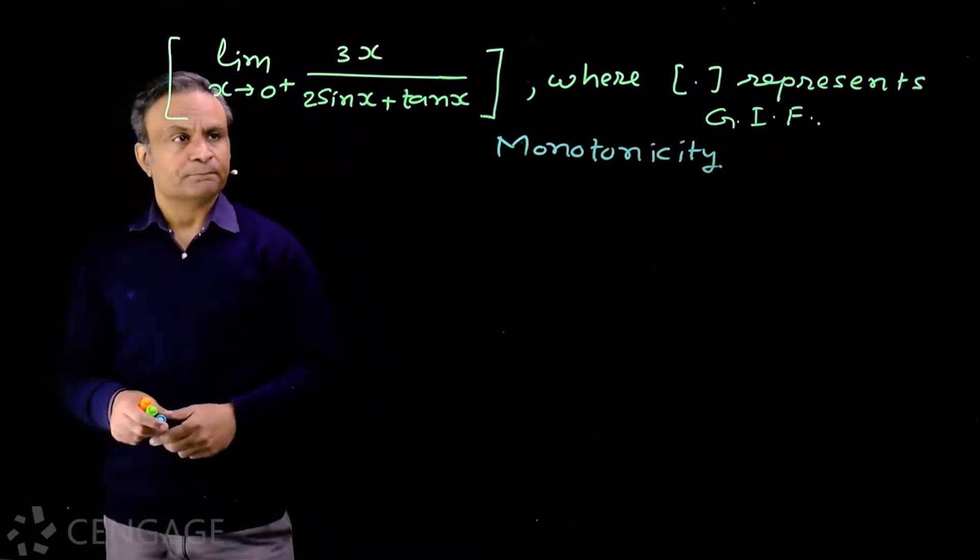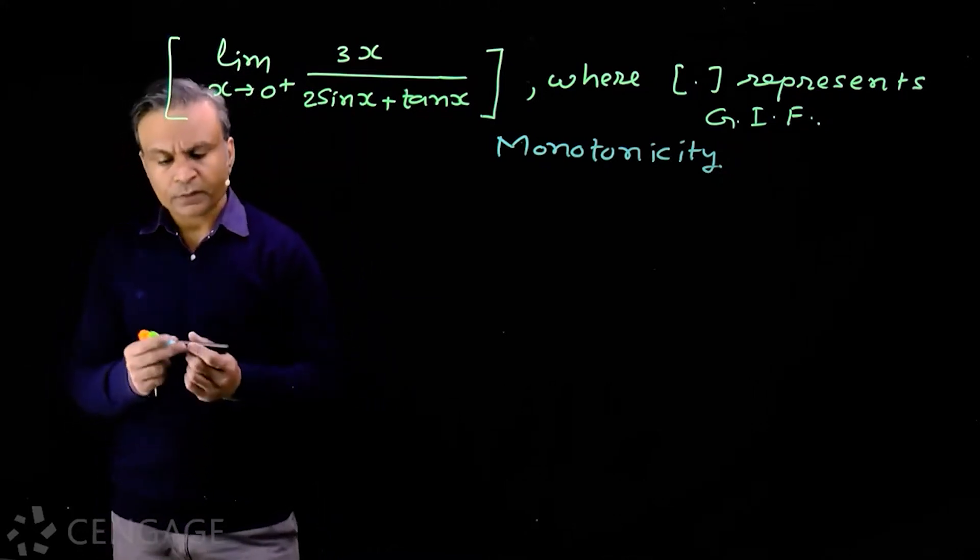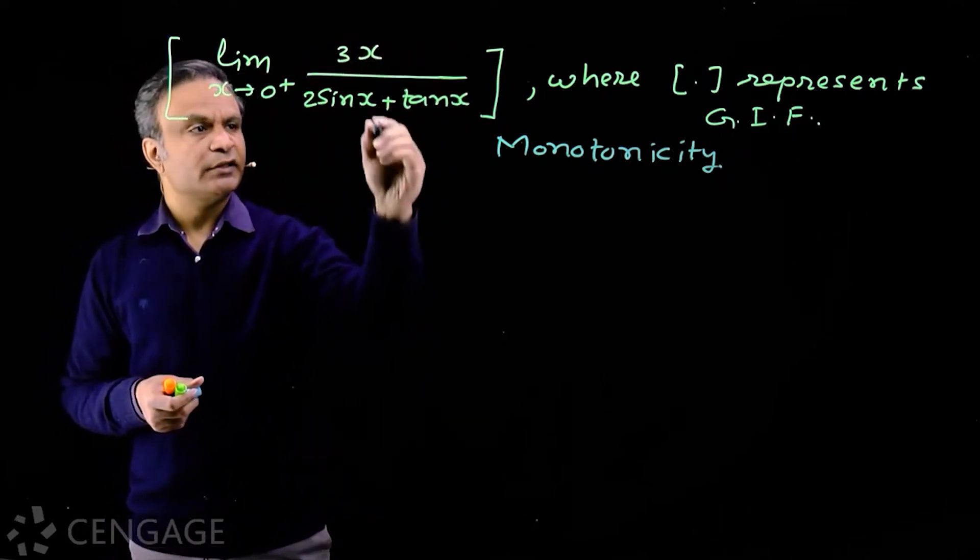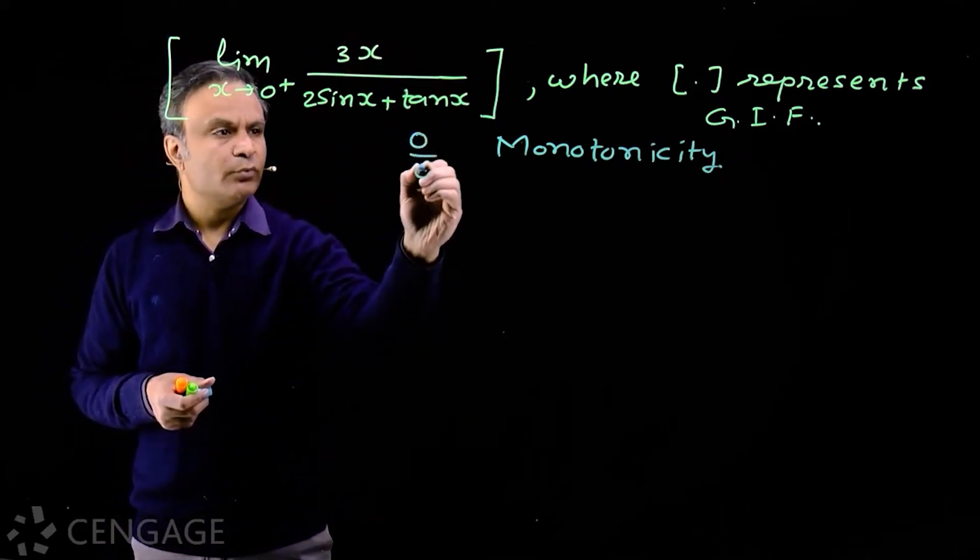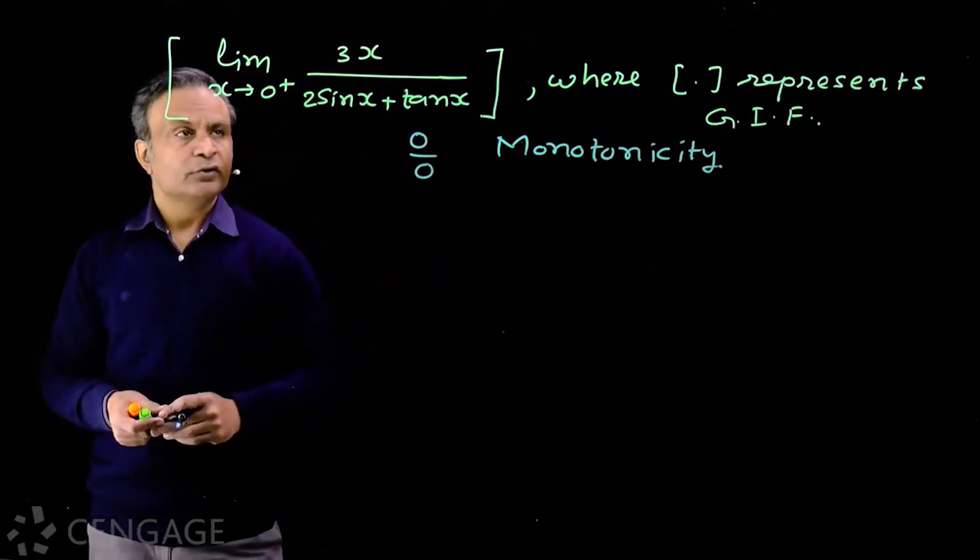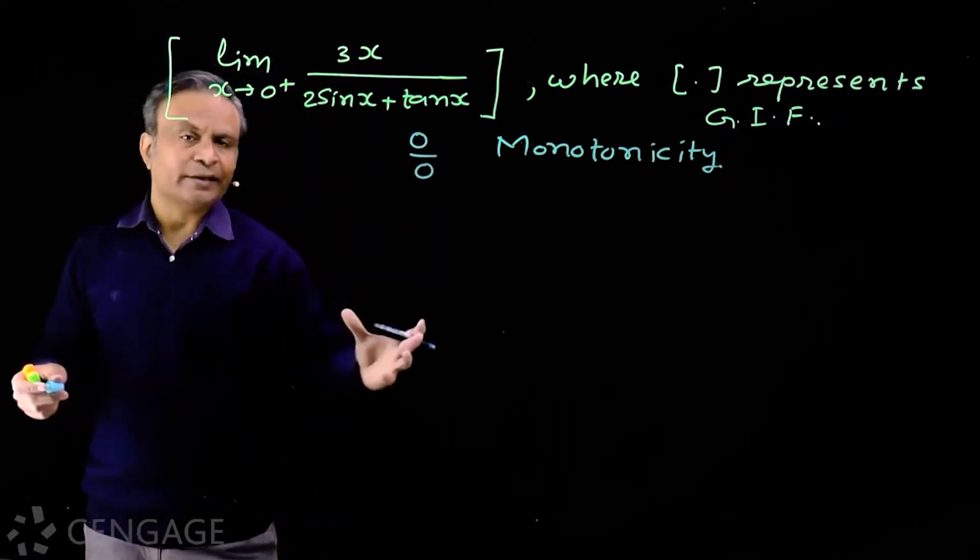Now this limit is simple. We first check the form. When x tends to zero plus, this expression takes the form 0/0. This is indeterminate form. So what we do, we divide numerator and denominator by x.